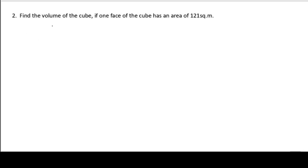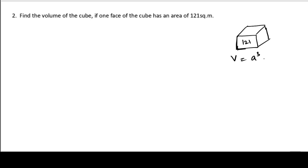Second problem: find the volume of the cube, if one face of the cube has an area of 121 square meters. Let this be the face of a cube. The area of this face is 121 square meters. We need the side of this square. If we get the side of this square, we can easily find out the volume of the cube. The formula for the volume of a cube is a cubed, that is, side cubed.